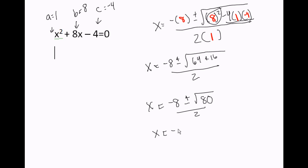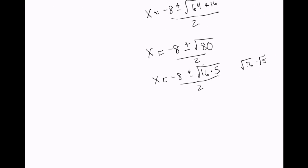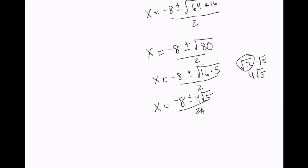Now, the square root of 80 can be written as the square root of 16 times 5, since 16 times 5 is 80. We can break the square root of 16 times 5 apart into the square root of 16 times the square root of 5. So x equals negative 8 plus or minus 4 square root of 5, all over 2.